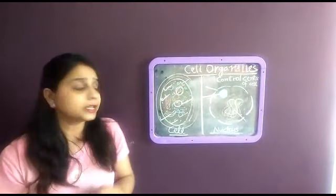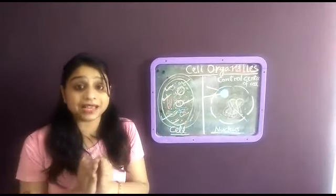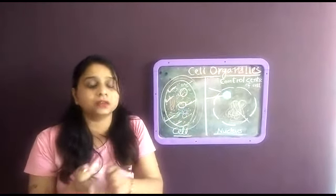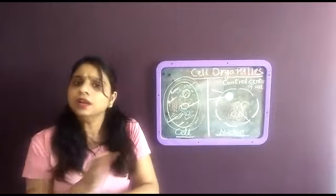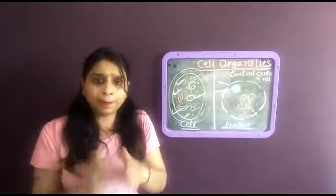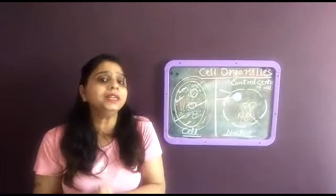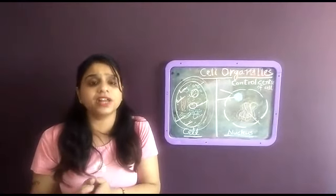The second main difference is in the animal cell. Plastids, which means chloroplast, leucoplast and chromoplast, are not present. But plastids are present only in plant cells. These are the main differences.